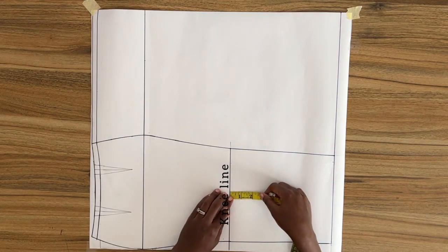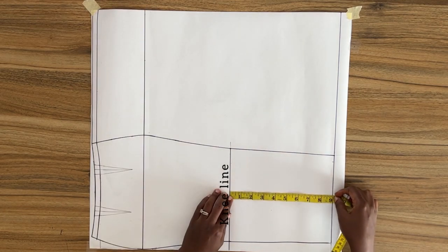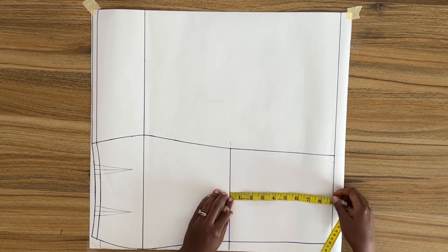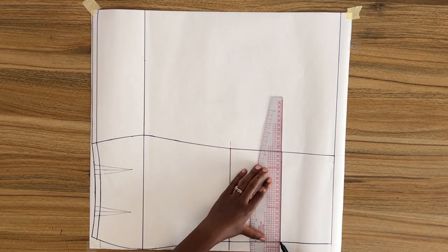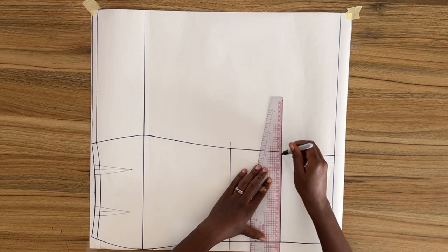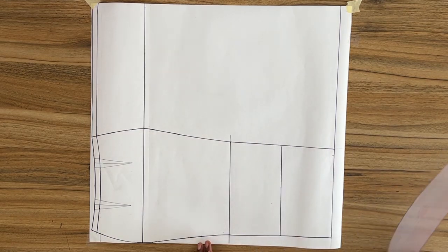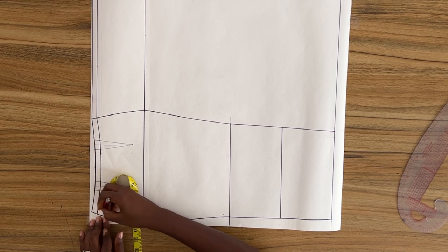I'm going to measure down from the knee line to the hem line and mark the midpoint. So now I'm going to square a horizontal line right across this point.